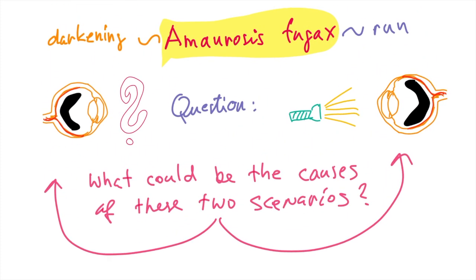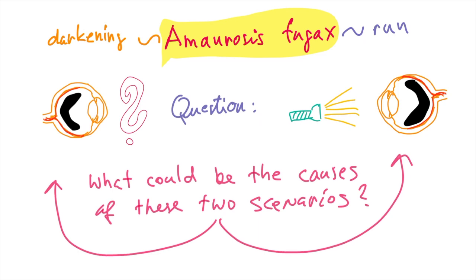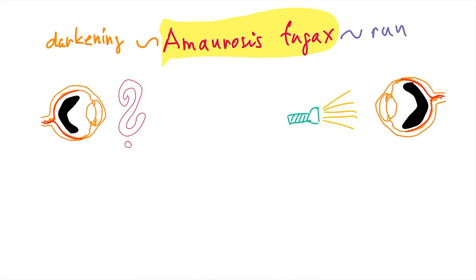Okay, and now let's answer the question about possible causes of amaurosis fugax. The cause of the first example where the blindness suddenly comes and goes without any obvious trigger is possibly due to embolus that flew into retina but got fortunately dissolved before causing any permanent lesions.